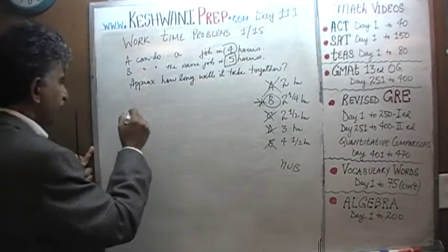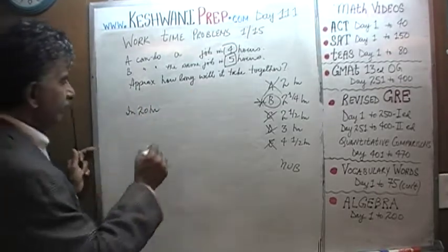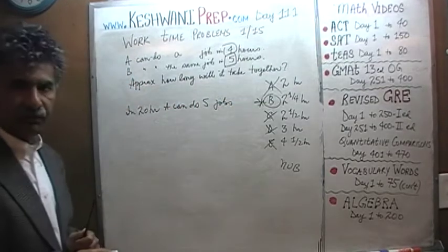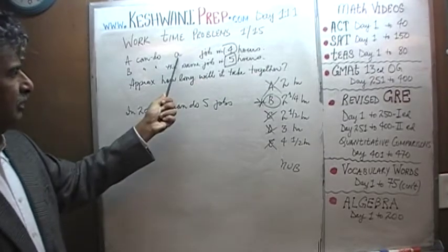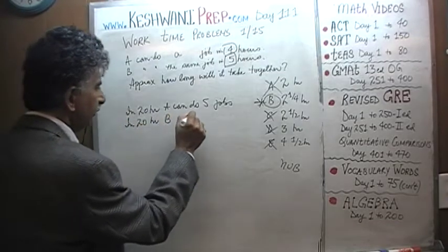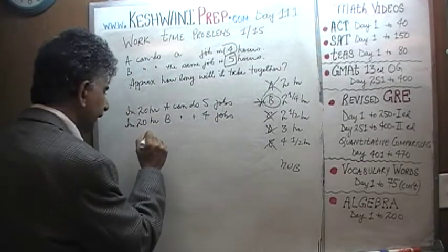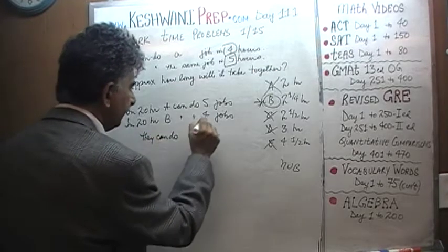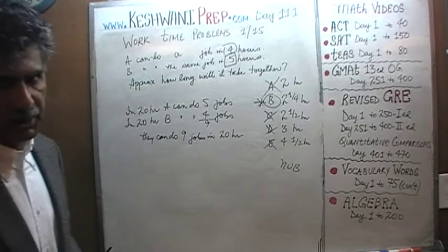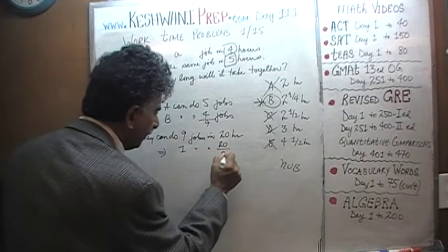This guy takes four hours, this guy takes five hours. What is the least common multiple? The least common multiple here is 20 — because four times five is 20. So ask yourself: in 20 hours, how many jobs can A do? A takes four hours, so in 20 hours A can do five jobs. Similarly, in 20 hours B can do four jobs. That tells us that together they can do nine jobs in 20 hours.